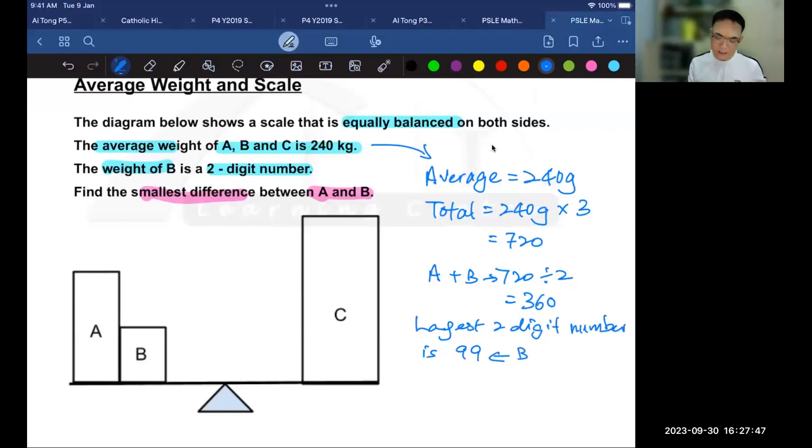Since A and B total 360, what is the smallest difference? All I have to do now, with this information, the total and the value for B, is find A. So let's find the weight of A.